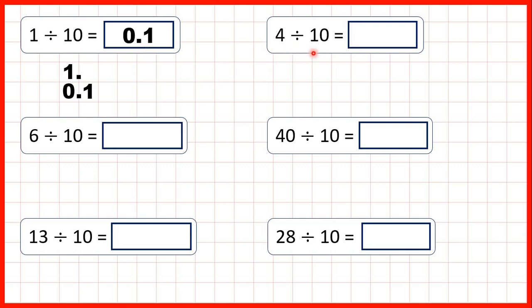So what's 4 divided by 10? We can write out the number 4 with the decimal point at the end, because there's always really an invisible decimal point on the end of every whole number. Then we copy the decimal point down. We're dividing, so the number is going to get smaller, which means digits are moving to the right. We're dividing by 10, which has one zero, so the digits move across one square to the right. Now we have point 4. The place value before the decimal point is our ones column, and we can't have an empty ones column, so we need to write a zero in this square. So we have 0.4, and that's our answer.